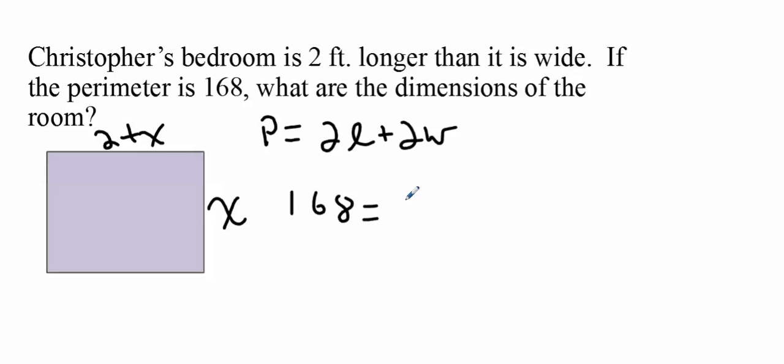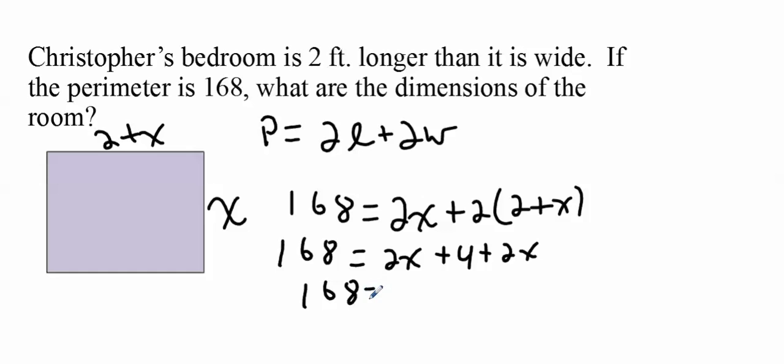And we know that the width of the room is X, so there's 2X, and then the length of the room is going to be 2 times 2 plus X. So in this situation, we're just going to go ahead and solve for the letter X. So you've got 168 equals 2X plus 4 plus 2X. Now, you can combine your like terms. 2X and 2X make 4X. So you've got 4X plus 4.